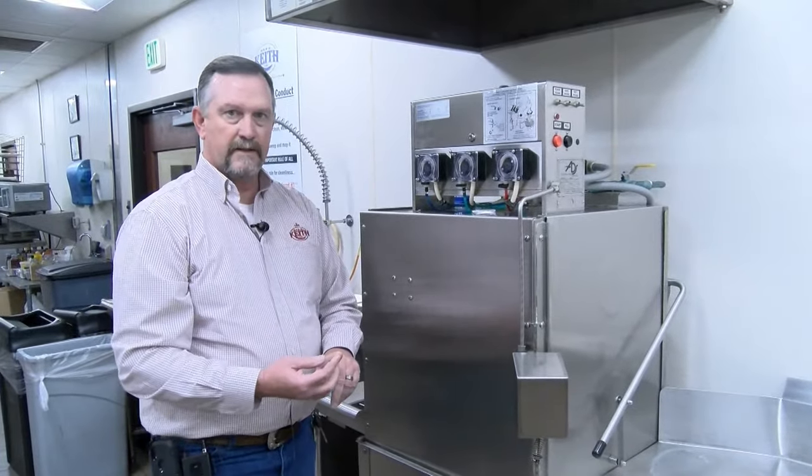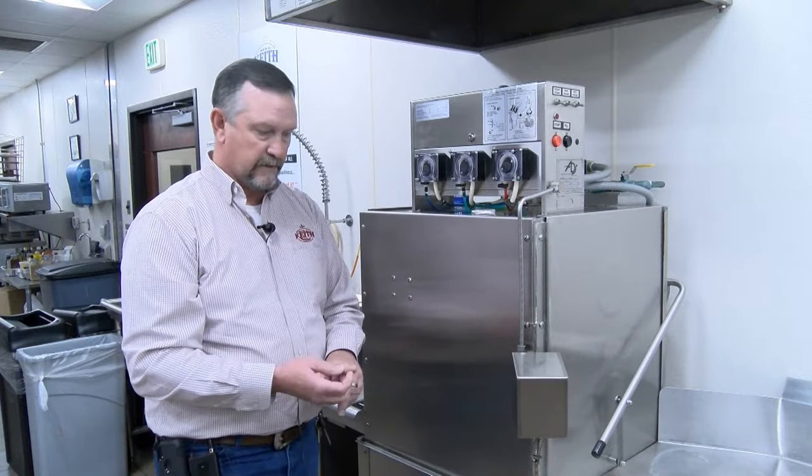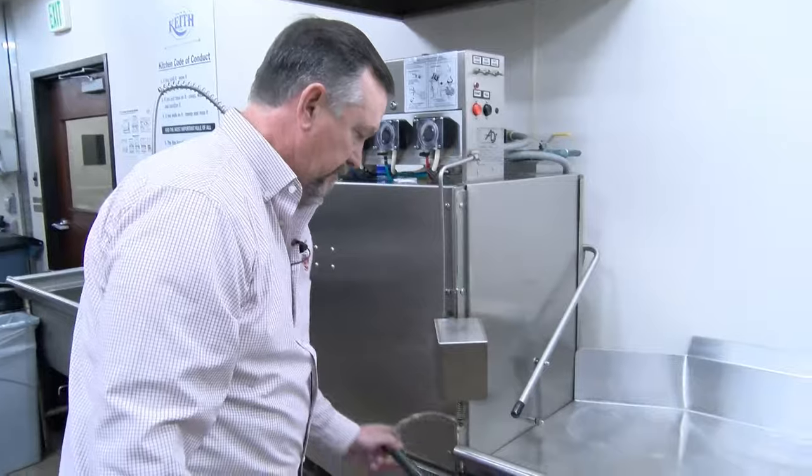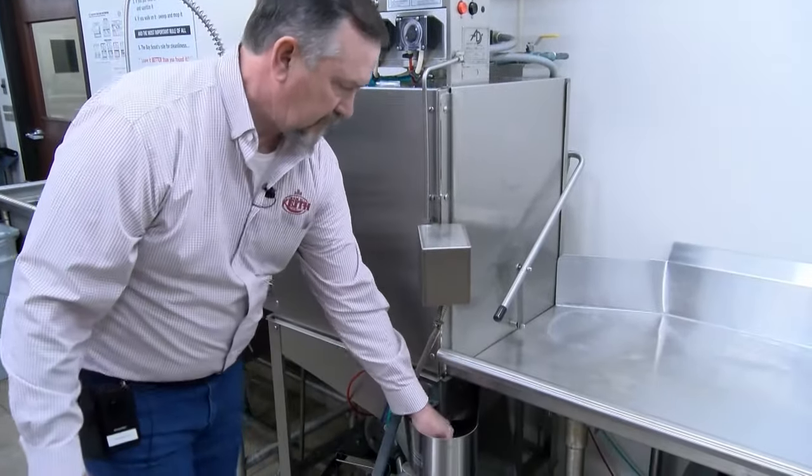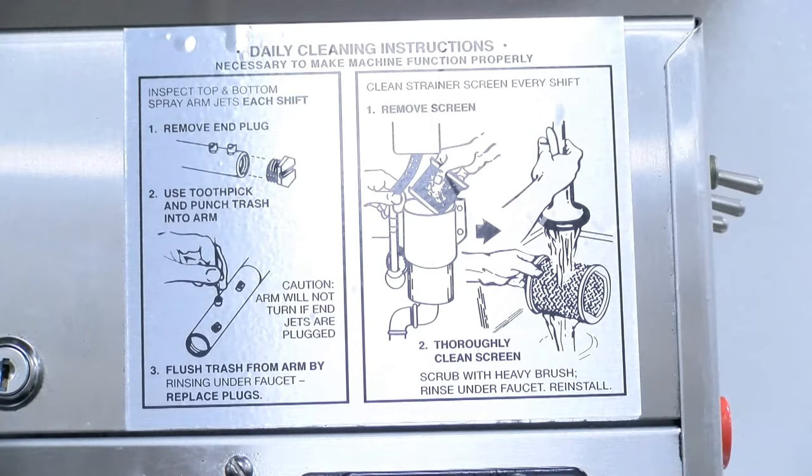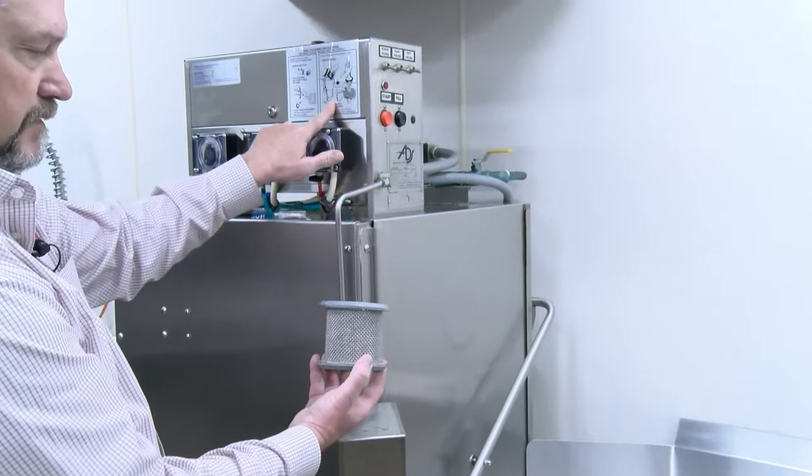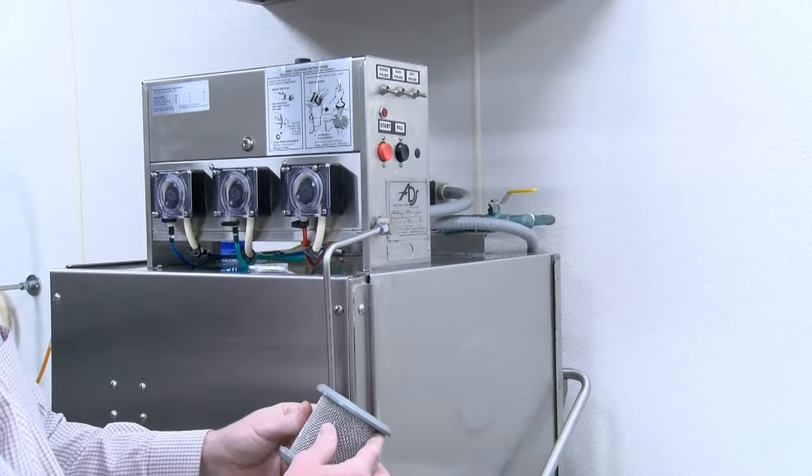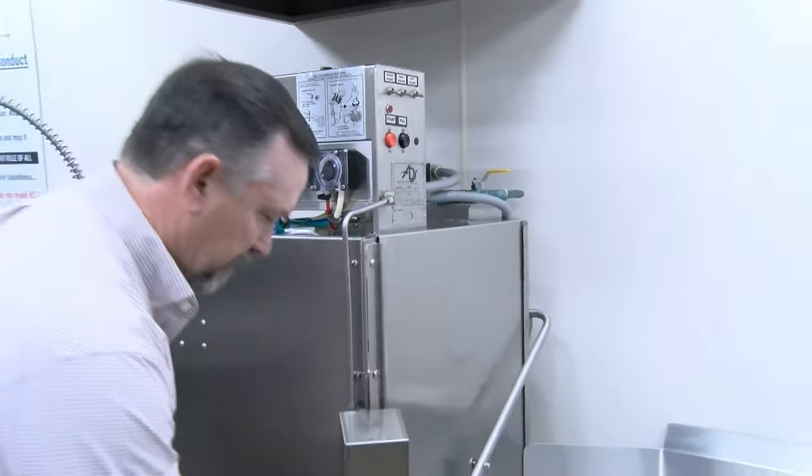The third thing we're going to check in the dish machine, and none of this requires tools, is mechanical action. Drain the machine. Pull the sump screen out. These are your daily cleaning. Daily. Make sure that it's clear. This is where your pump gets all of its pressure from. Put it back in.